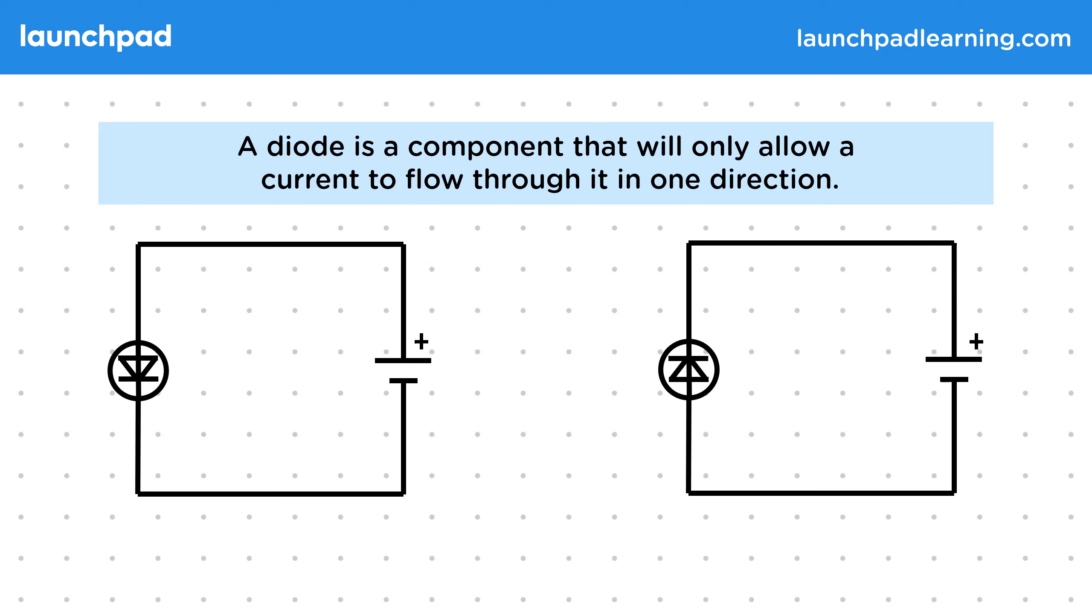For your exams, you will need to be able to tell when a current will or won't flow through a diode in a circuit diagram. Remember that a conventional current will flow from the positive end of the cell to the negative end. So in the circuit on the left, it will flow anti-clockwise. Notice that this is the same direction the triangle in the diode symbol is pointing.